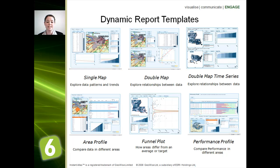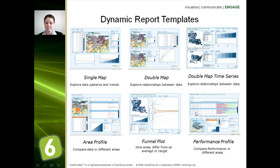The double map has a scatter plot but also has two different maps with different data, though they share the same base geography. The double map time series does have two different base geographies, so you can see the completely different geographies in those two maps, and we've got bar charts and time series charts for each. For the area profile, we can compare different areas alongside each other for different themes and indicators. The funnel plot shows how areas differ from an average or target, and the performance profile lets you compare performance in different areas.